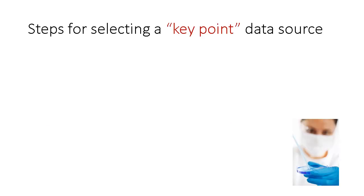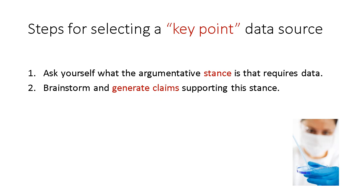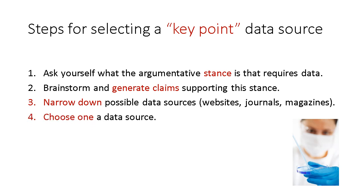So how do you go about choosing a source of data that you can use to access key points? Your stance and the argument needs to be clear. After you have clearly identified that stance, brainstorm and generate as many claims related to that stance as possible. Narrow down your sources of data—whether it's journals, websites, or media sources—and as long as they are all authentic and named, narrow these down and choose one. Choose one source of data and then your summary will be focused on this source.